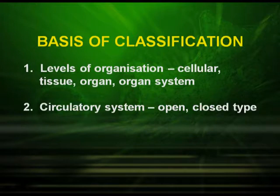Circulatory system is the next important basis of classification. It may be the open type or the closed type. In the open type, the blood is pumped from the heart directly into the tissues and cells. In the closed type, which is found in higher animals, they have blood vessels and the blood is circulated all throughout the body.